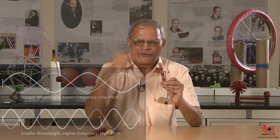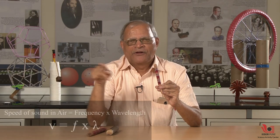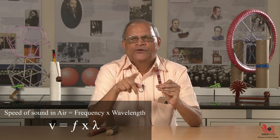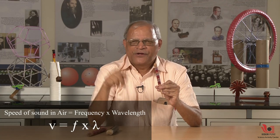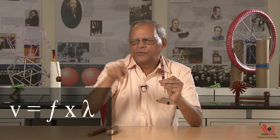Smaller lambda means higher frequency, because frequency multiplied by wavelength equals the speed of sound in air. The speed of sound in air is about 340 meters per second at room temperature — call it V. So the formula is V = F × λ, where F is frequency and λ is wavelength.